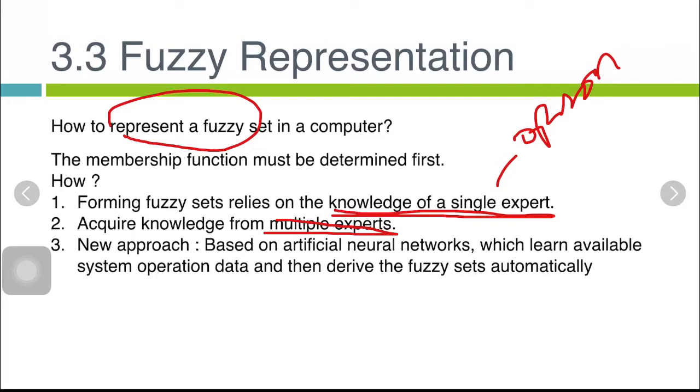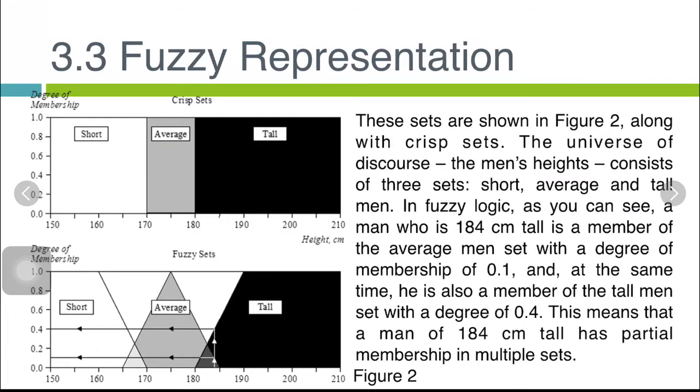Now we return to our tall man example. After acquiring the knowledge of man's height from the expert, for example, we could produce a fuzzy set of tall men. In a similar manner, we could obtain fuzzy sets of short and average men as well. These sets are shown in Figure 2 along with crisp sets.